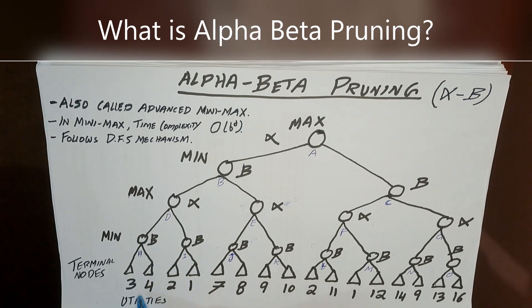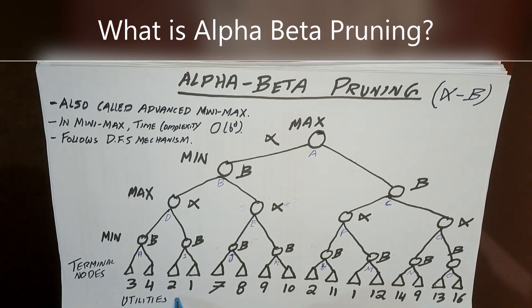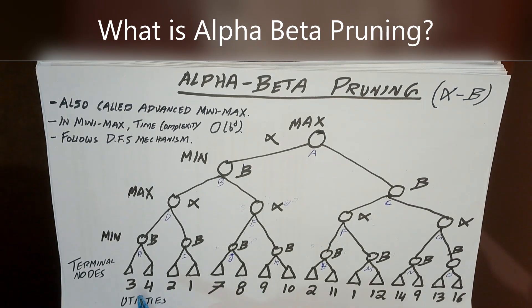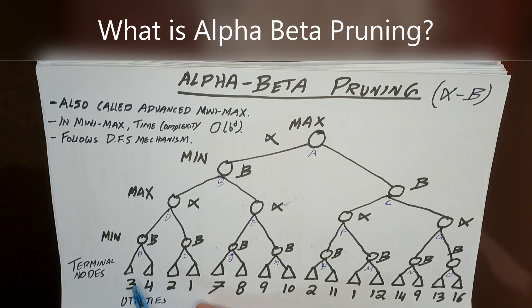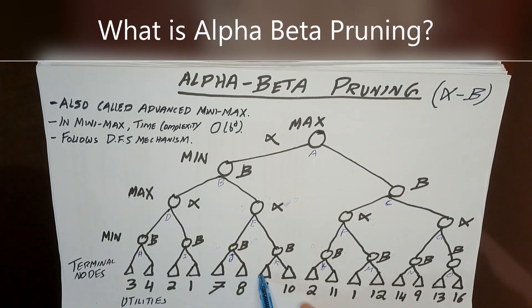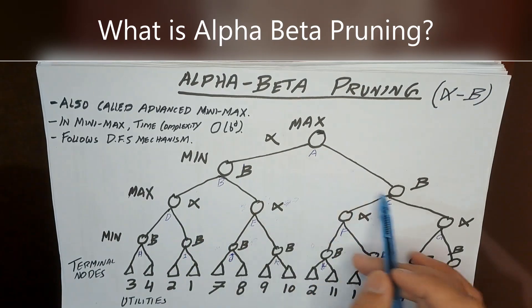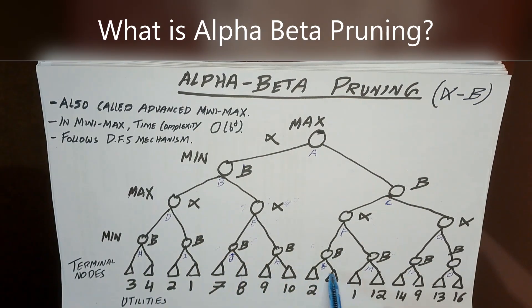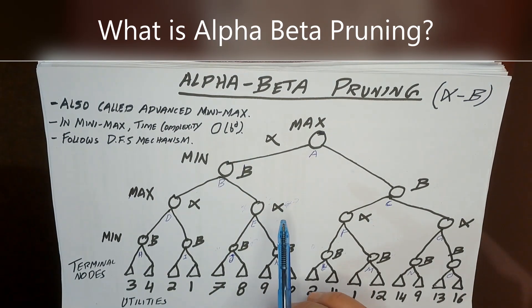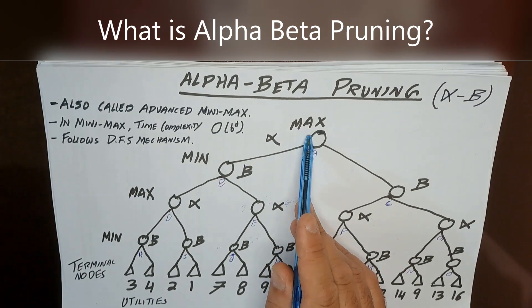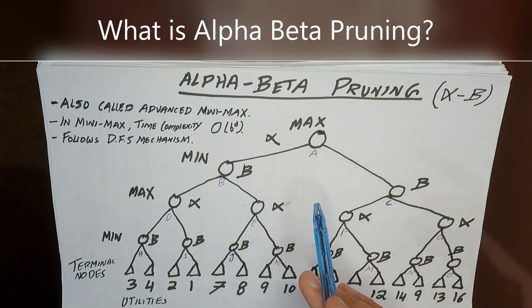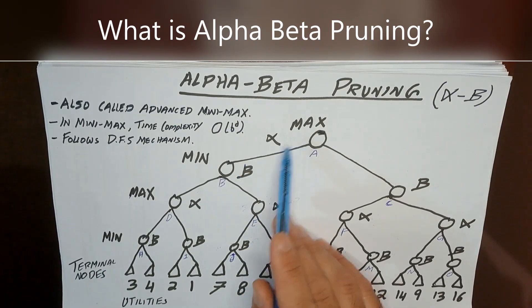Min is Max's opponent, who wants to reduce Max's reward. At the end of the tree we have terminal nodes and utilities. Utilities are the score or reward that can be obtained at the end of a game — not just win or loss, but numerical values like 3, 4, 2, 1. The nodes are named A, B, C, D, E, F, H, I, J, K, L, M, N, O. We use alpha to represent the value of Max and beta to represent the value of Min.